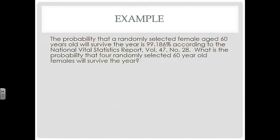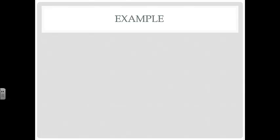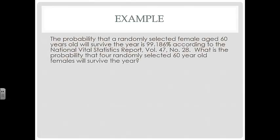The probability that a randomly selected female aged 6 years old will survive the year is 99.18. According to the National Vital Statistics Report, Volume 47, Number 28, what is the probability that 4 randomly selected 60-year-old females will survive the year? Well, we want to look at the probability that all 4 survive. The probability that 1 will survive is 99.186%, or 0.99186.